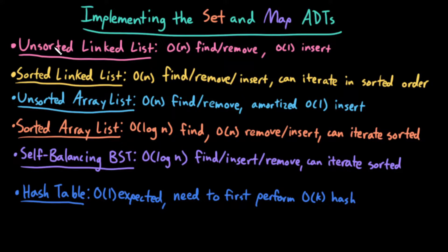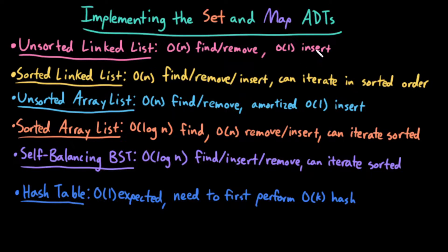However, also because it's unsorted, I could theoretically iterate over the elements I'm storing, but it would be in some arbitrary order — they wouldn't be in any necessarily meaningful order. They could be in the order in which I inserted them, so that might be nice, but they're not going to be sorted alphabetically or anything like that.